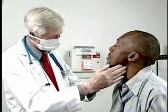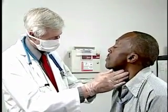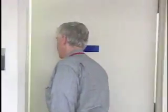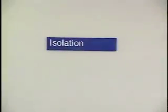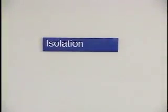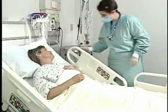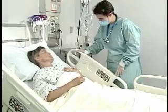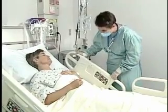If a person starts to exhibit symptoms of a serious contagious disease, they may be isolated. Quarantine can usually be done in the home, whereas isolation is usually done in the hospital where the ill person can receive medical care.